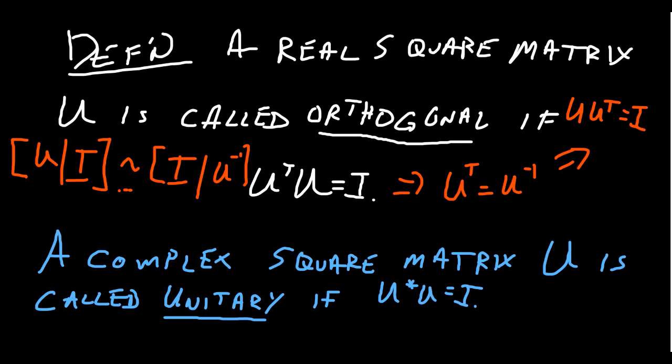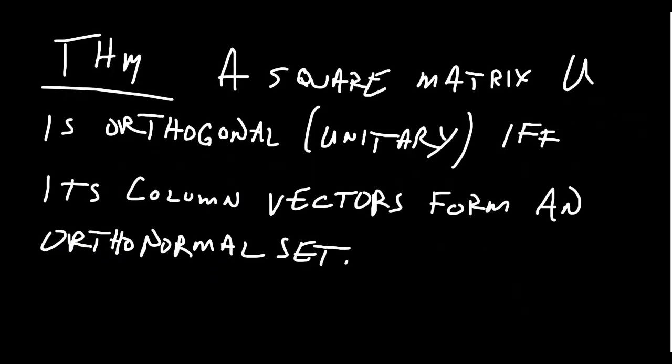The complex counterpart of an orthogonal matrix is called a unitary matrix. Whenever we talk about complex matrices, we never use the transpose — instead we use the conjugate transpose. So a unitary matrix is a complex matrix where the conjugate transpose equals its inverse.